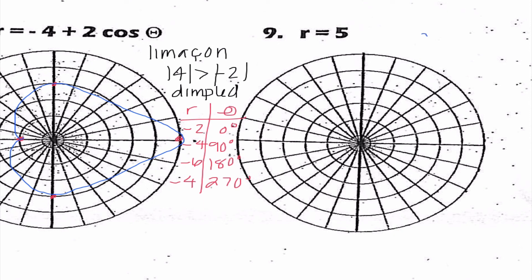Nine, r equals five. This is a circle. So I'm going to go out one, two, three, four, five, and go ahead and draw a circle at the appropriate angle.